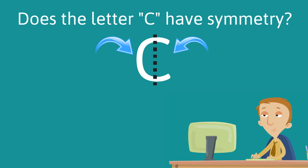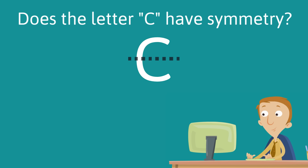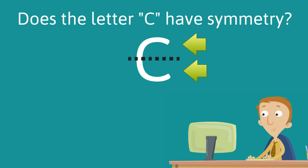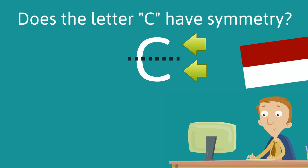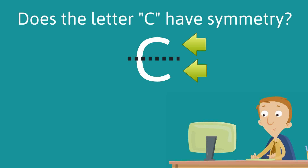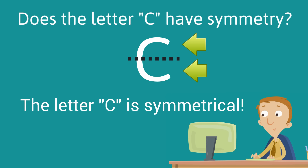These sides don't match. But wait — if we try a horizontal line of symmetry, do both sides match? Yeah, they sure do. So does the letter C have symmetry? Yes, it does. That means the letter C is symmetrical.